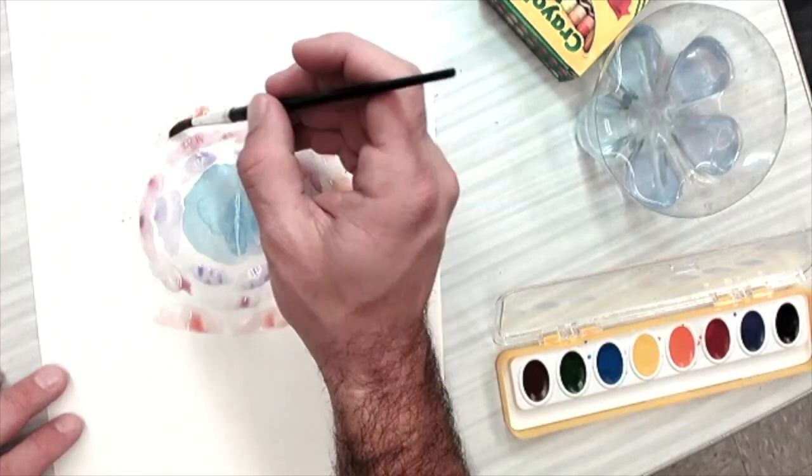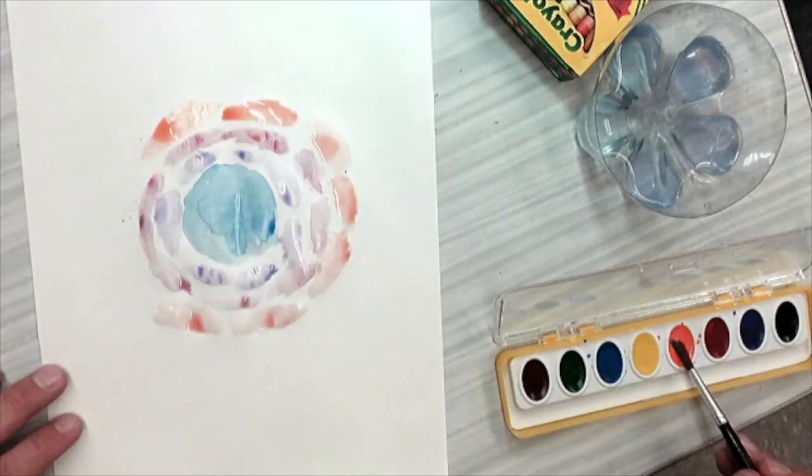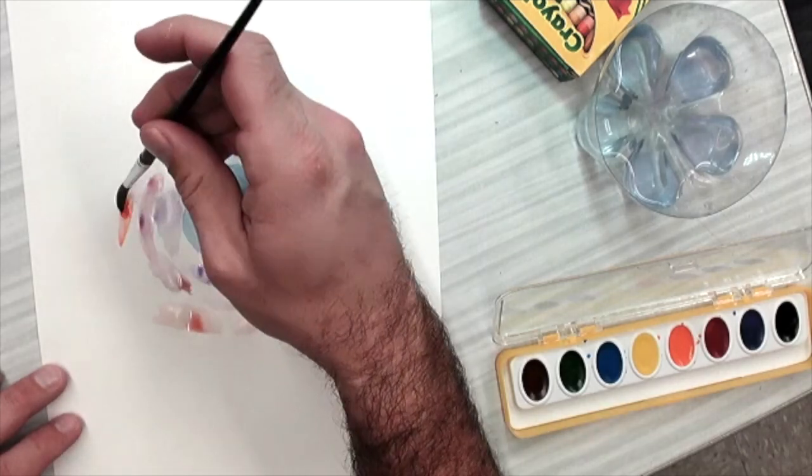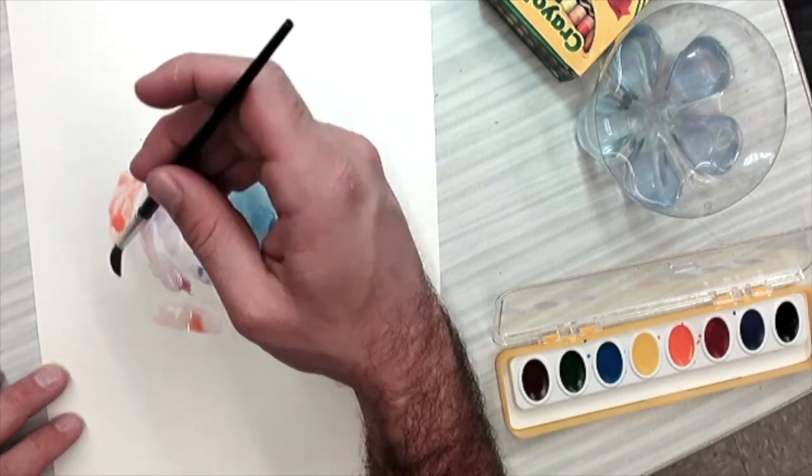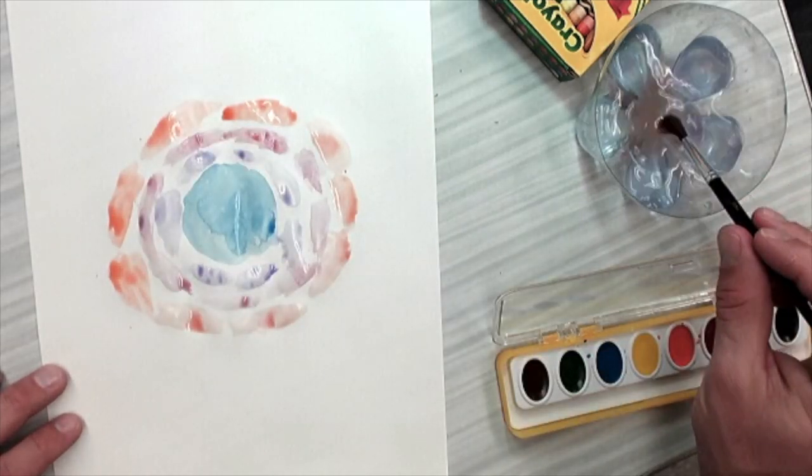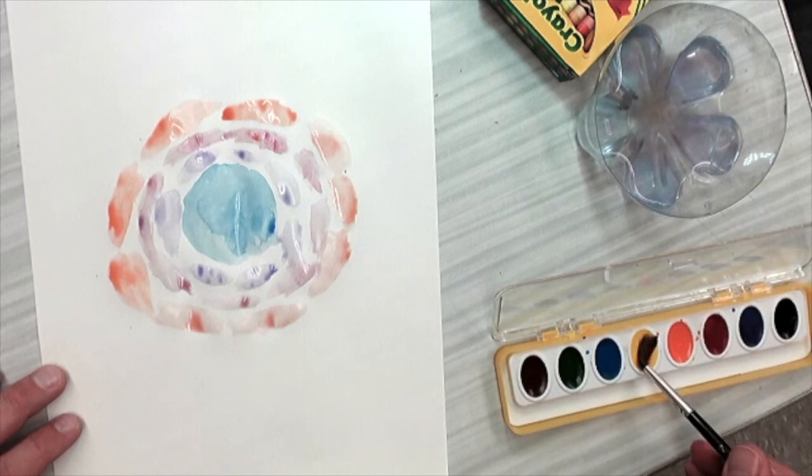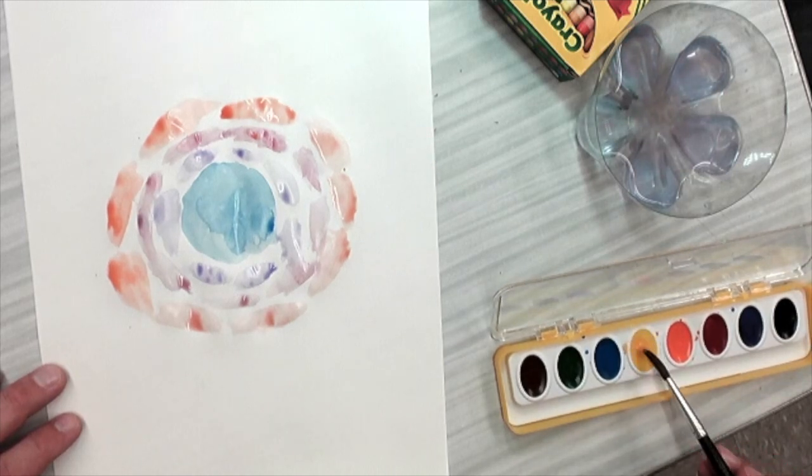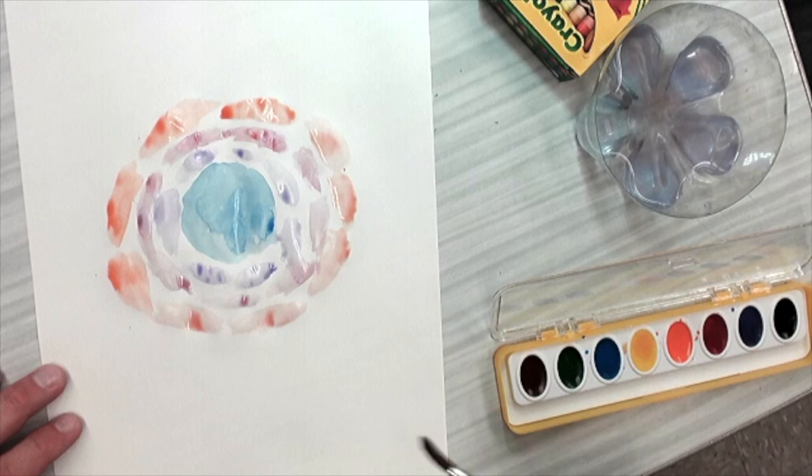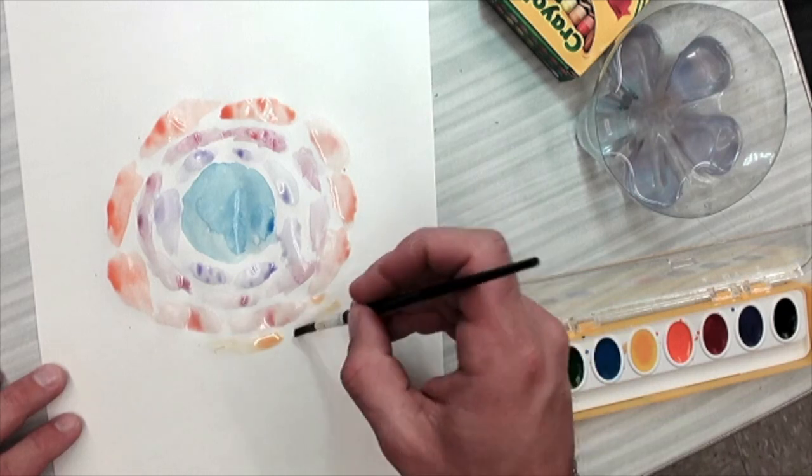So keep going around with your next color. And what you're going to do is you're going to continue to do this until you've covered the whole page. So if you want to change your pattern or change the way it looks, that's fine. I'm going to keep doing mine almost in a rainbow pattern where I go to colors that are like the next color. And then eventually I'll start over with that first color again. So I'll go right back to blue. So go ahead and keep adding paint all the way around until you cover your whole paper.